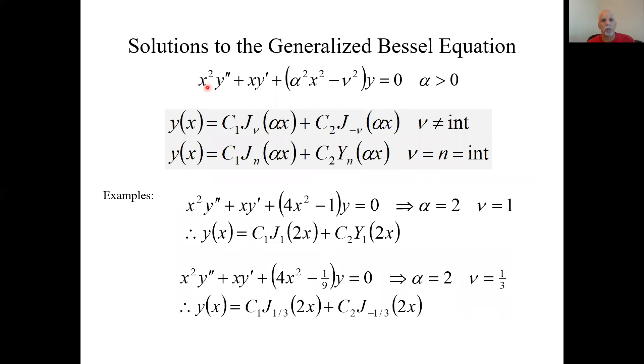This is a more generalized form of the Bessel equation. It has this alpha in it. You can do a variable substitution and do some chain rule manipulation to get these more general solutions to this more general Bessel equation. Which means we can now write, if we see any equation in this form, we just write its solutions in one of these two forms: either a linear combination of Bessel functions of the first kind, or a linear combination of Bessel functions of the first and second kind.